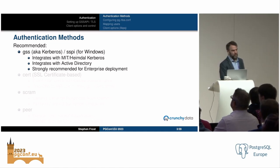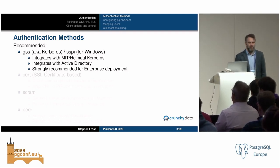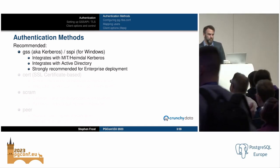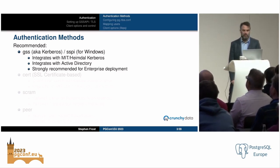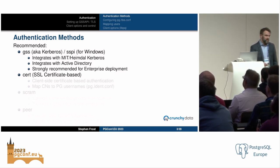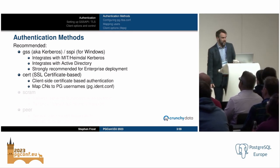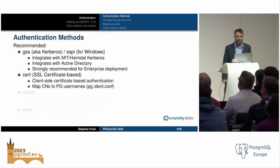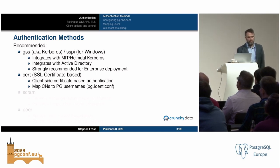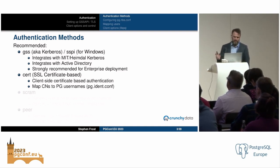GSS integrates with MIT and Heimdall Kerberos and also integrates with Active Directory. This is what I strongly recommend for any proper enterprise deployment — where you have an Active Directory environment, you really should be using GSS or SSPI. Another really strong approach is certificate-based authentication using TLS/SSL, where we have client-side and server-side certificates that cross-validate each other. You can also do mapping — mapping CNs (common names) inside of a client-side certificate to Postgres usernames.